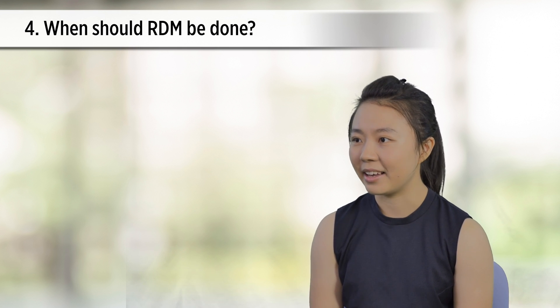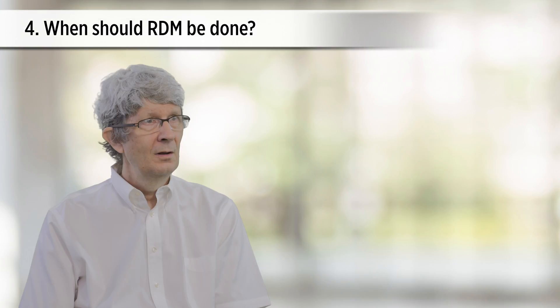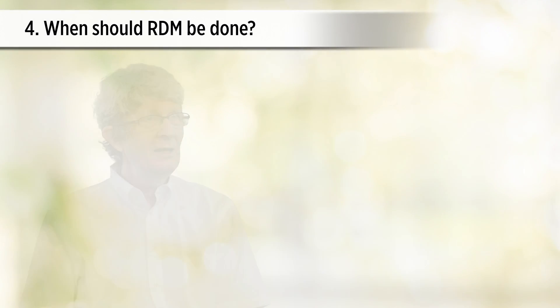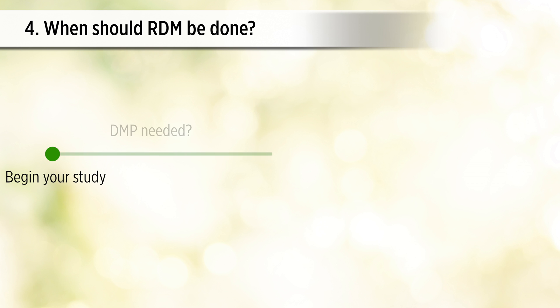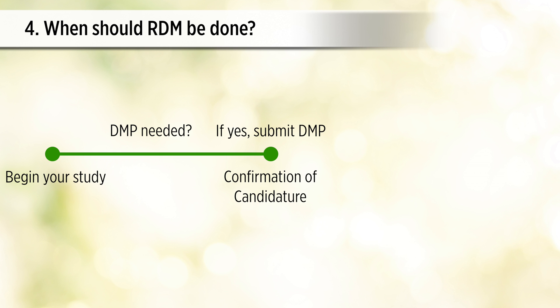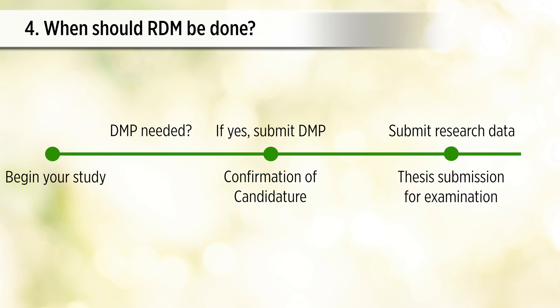So when should I make a decision on the data management plan and research data? Students have to make decisions on their data management plan to have their candidature confirmed. In other words, a decision has to be made before the end of their probationary period. If a data management plan is necessary, students need to attach it along with their detailed scheme of research for their candidature confirmation. For research data, where applicable, students should upload their data to the online form when they submit their draft thesis for examination.